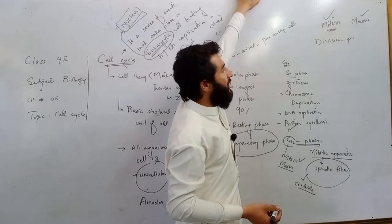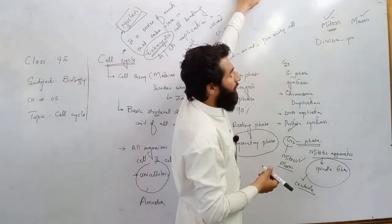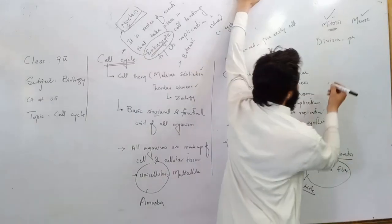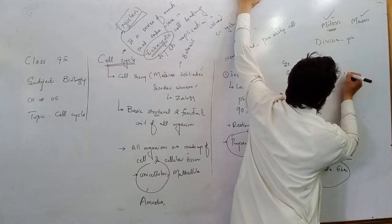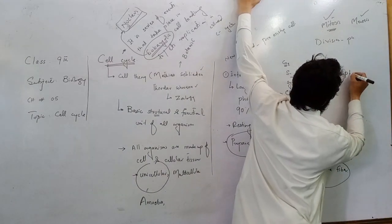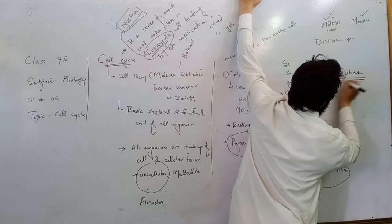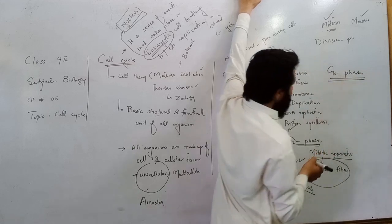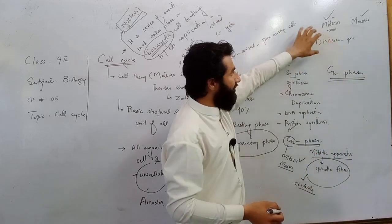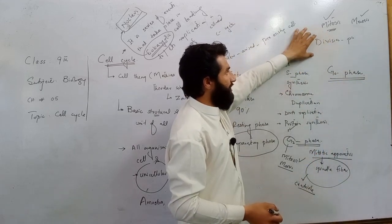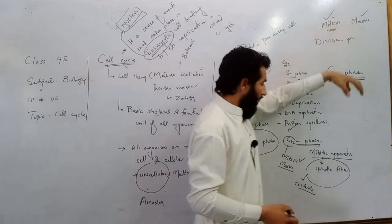The resting stage of the cell before entering the division phase is known as G0 phase. When the cell enters G0 phase, division cannot be carried out.